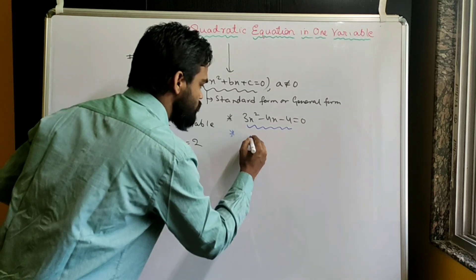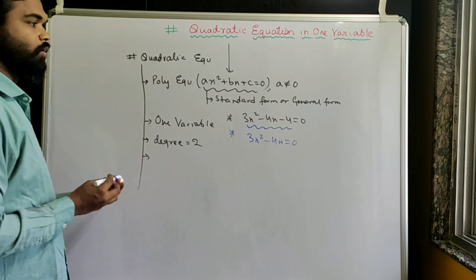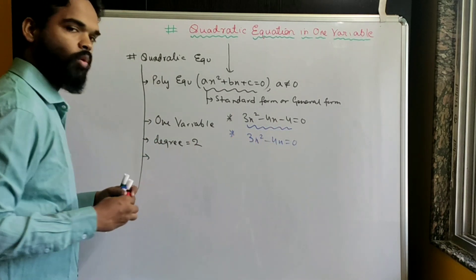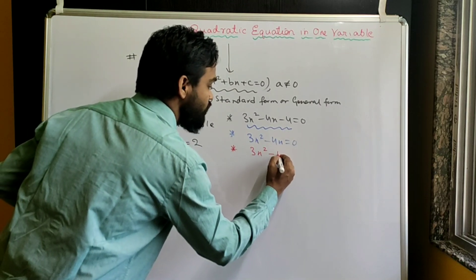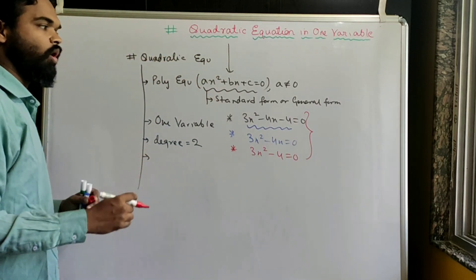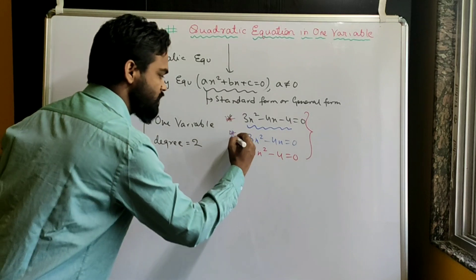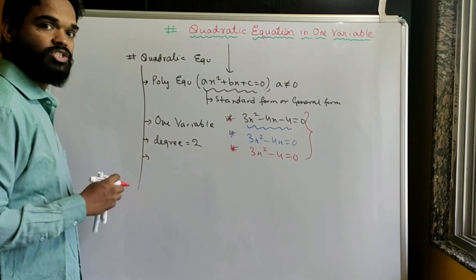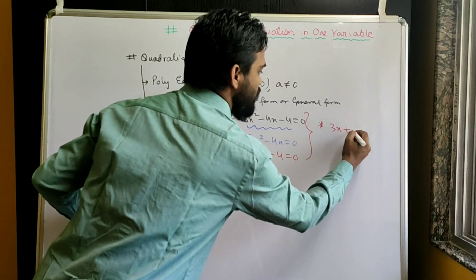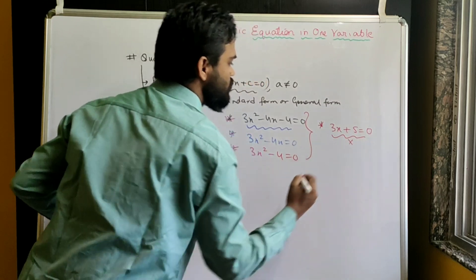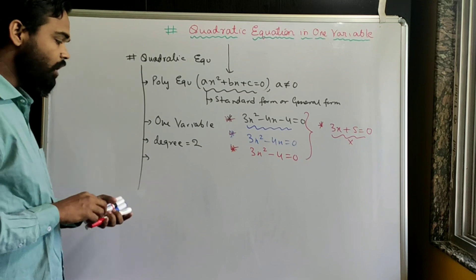Even 3x² - 4x = 0, where the constant part is zero, is also a quadratic equation. Similarly, 3x² - 4 = 0 is quadratic. These are all quadratic equations in one variable because in all cases the degree of x is 2. But 3x + 5 = 0 is not a quadratic equation — it is a linear equation.